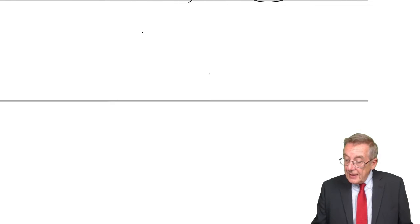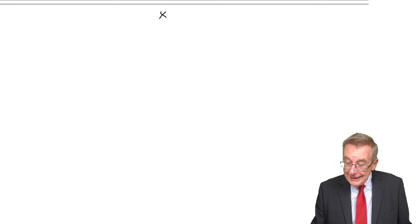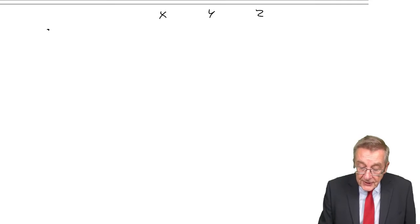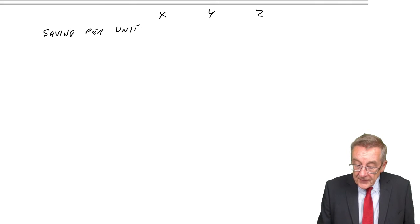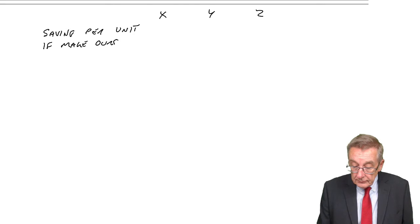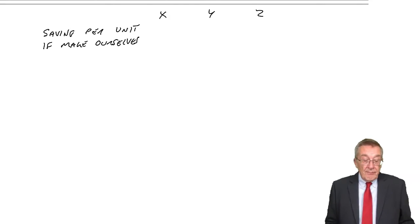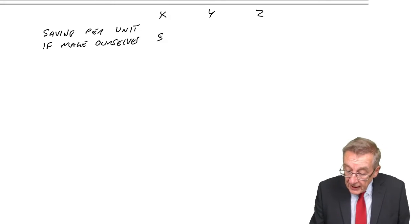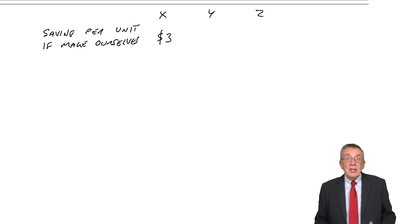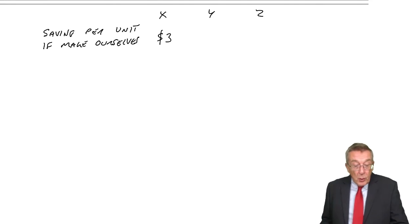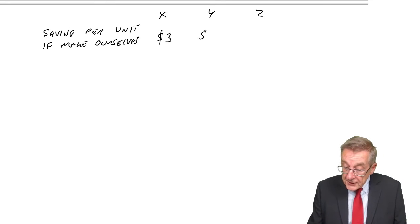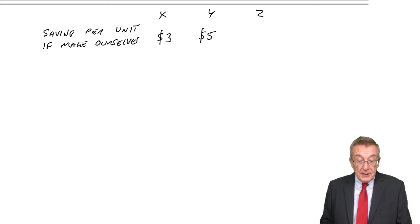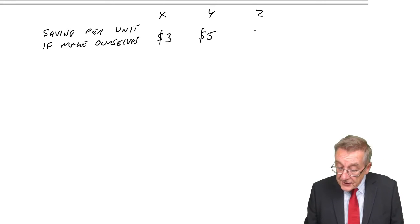So, what we do here is, for each unit, we say, what would be the saving per unit if we make ourselves? X, make ourselves, cost $10. Buy from outside is $13. We'd save $3 if we make the units ourselves. Y, $12 against $17. We'll save $5 on every unit we make ourselves. Z, we'd save $2.